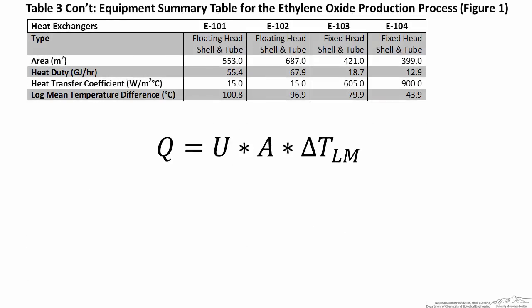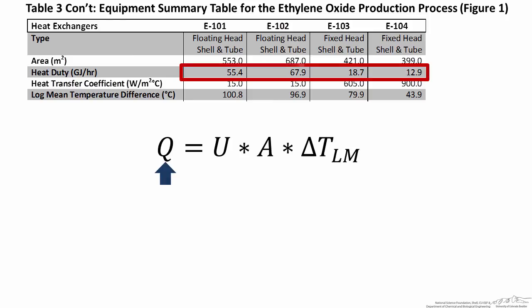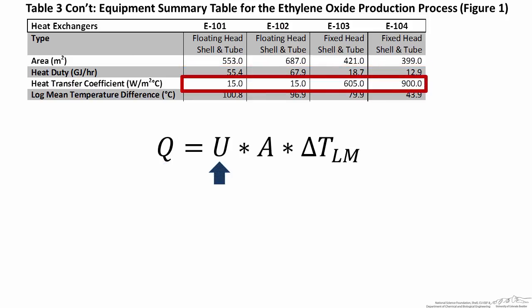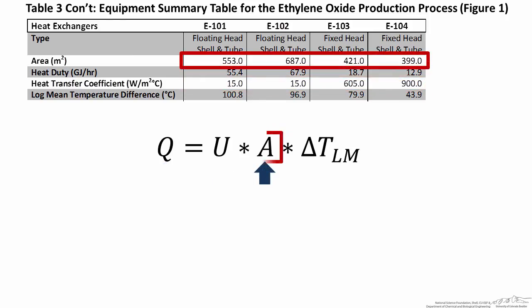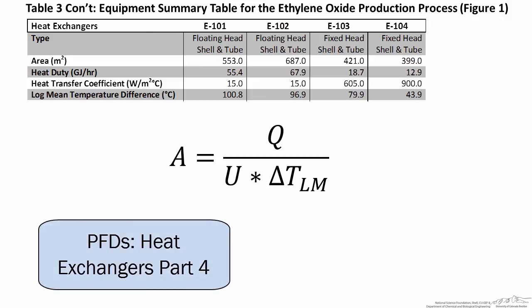Getting back to our heat exchanger expression, once we've optimized our heat exchanger and determined the log mean temperature difference, we use that with the calculated heat duty and the estimated or calculated heat transfer coefficient to determine the area of heat transfer. This is one of the most common ways of calculating area for a heat exchanger, and performing this calculation correctly is critical to making sure you don't purchase a heat exchanger that's either too large or too small. In the next lecture, we'll discuss shell-side and tube-side fluid designations, and how this is shown on an equipment summary table. Thanks for watching.